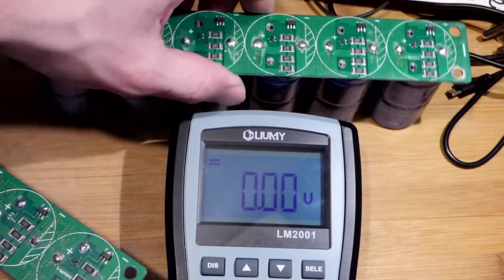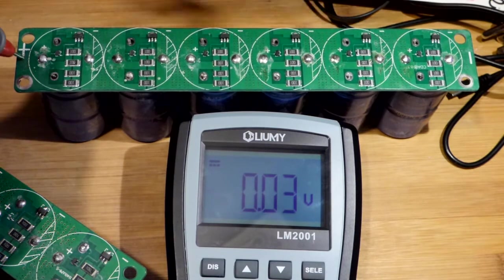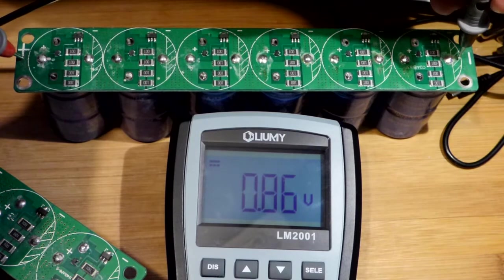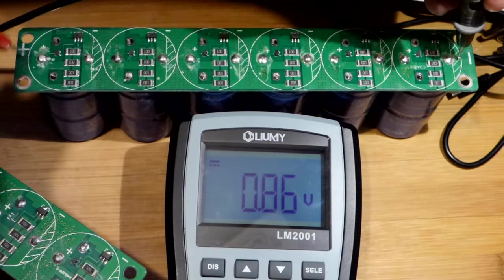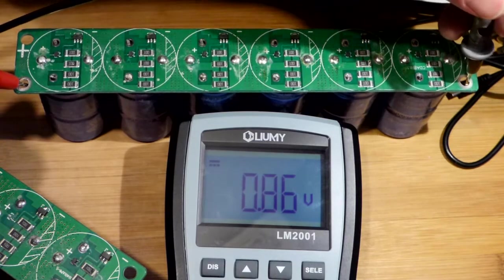We have the new capacitor here. I haven't done anything to it, but this is how it came in the mail. We can see there's 0.86 volts across all of them. Or we could measure it here - same voltage.